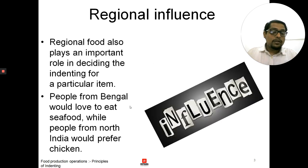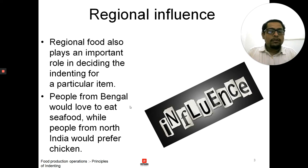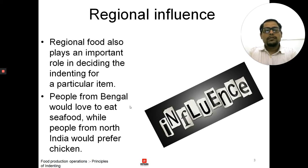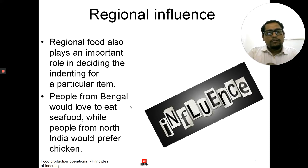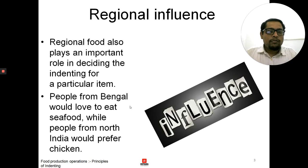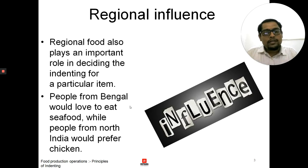Next is regional influence. Regional food plays an important role in deciding the indenting for a particular item. For example, people of Bengal love to eat seafood, while people from North India prefer chicken or mutton. If some of us are attending a wedding in North India, particularly in Punjab, and they are also serving Bengali or Odia food from Odisha, the Punjabis at the wedding would taste it only a little. They won't take much because that taste has not been familiarized by people in North India or Punjab, so they won't take their chances.